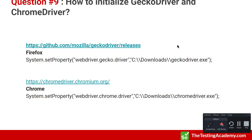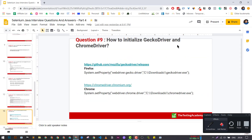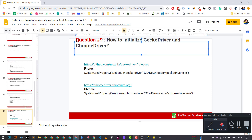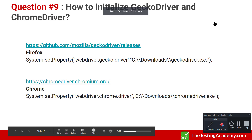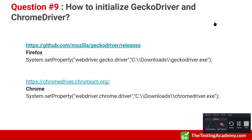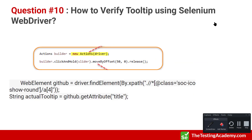Question nine: How to initialize the GeckoDriver and ChromeDriver. You can use the `System.setProperty` method in Java — mention `webdriver.gecko.driver` and provide the path to your driver. After mentioning the driver path, it will initialize. Question ten: How do you verify a tooltip? A tooltip appears when you hover over an element. You can use the Action Builder class and the `clickAndHold` method with some offsets to trigger the tooltip. After getting the tooltip, use `getAttribute` to get the title or any text of the tooltip.